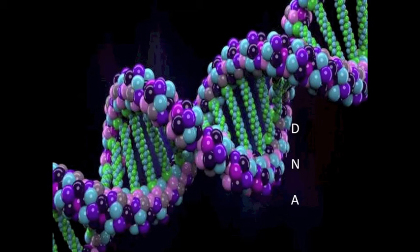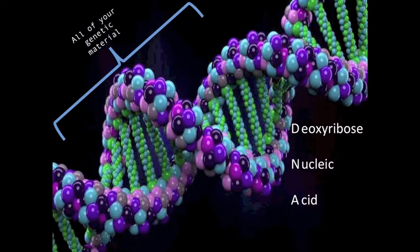To start from the beginning, DNA or deoxyribonucleic acid is basically just all of your genetic material. DNA is what tells your cells what proteins to make and when to use them.